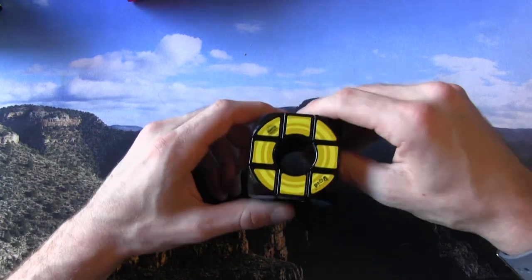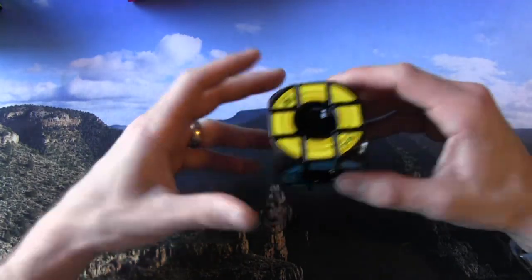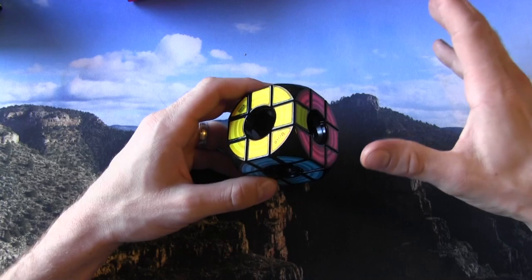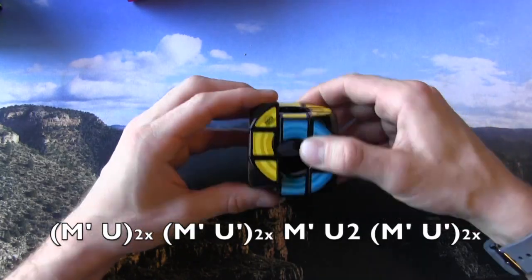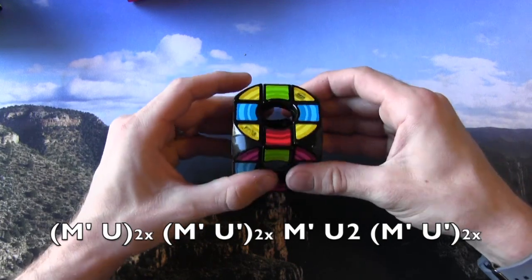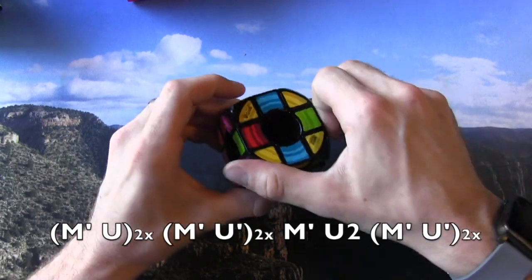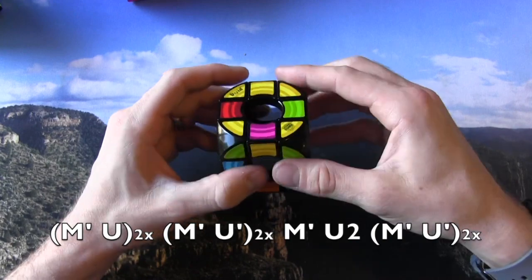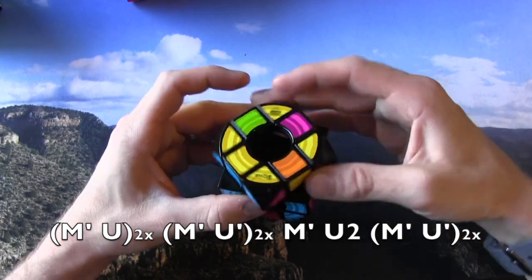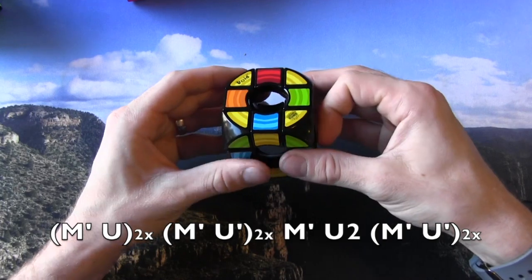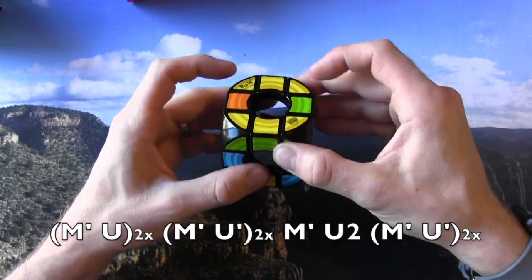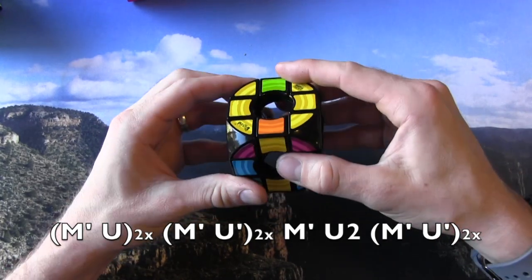And so there's an algorithm for this. And there's a lot of different ones out there, but this one is my favorite. All you're doing is m'u twice, and then m'u' twice, and then m'u2, m'u' twice.